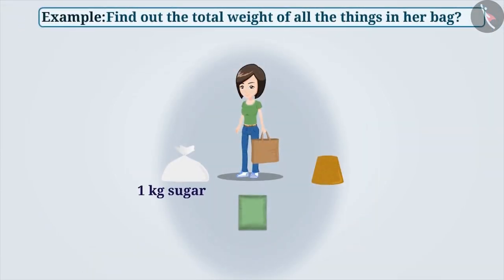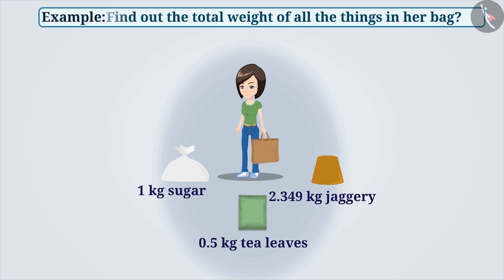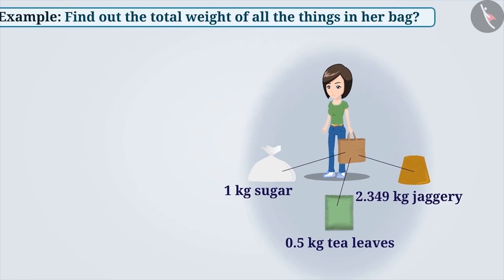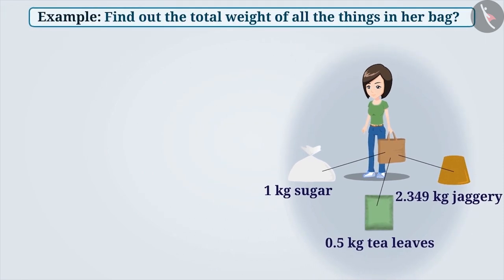Nisha bought 1 kg of sugar, 0.5 kg of tea leaves, and 2.349 kg of jaggery. She put the items in her empty bag. What is the total weight of all the things in her bag? To find the total weight, we need to add 1 kg, 0.5 kg, and 2.349 kg.